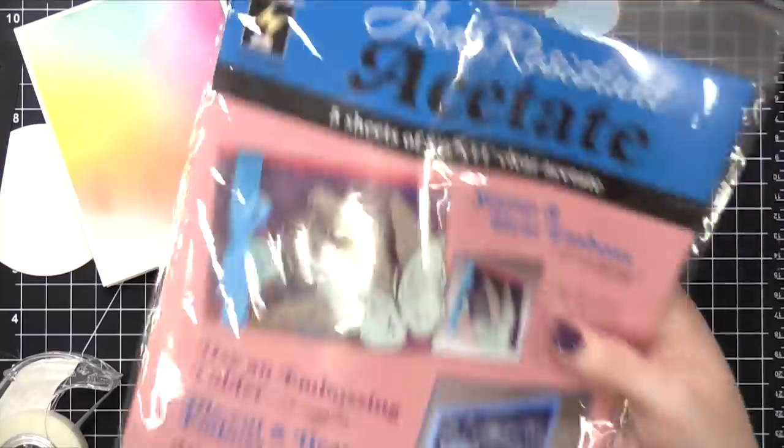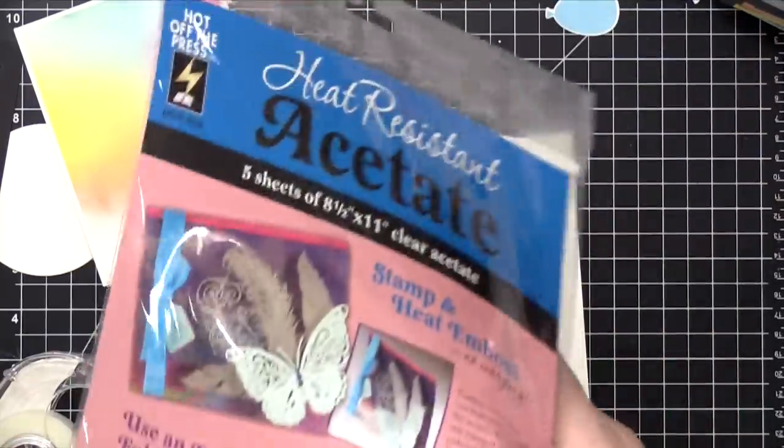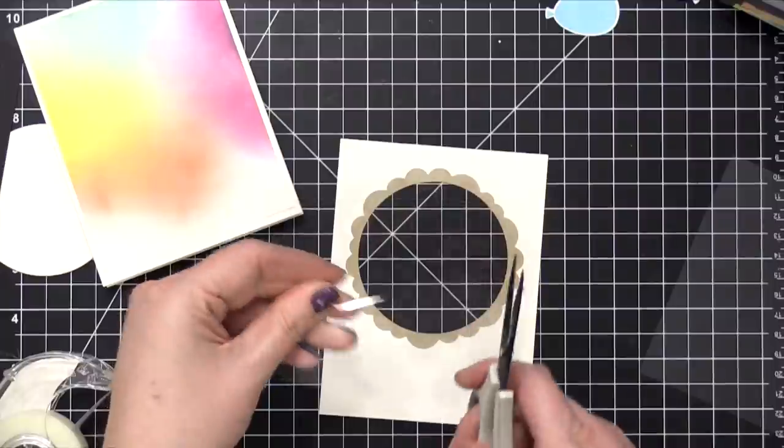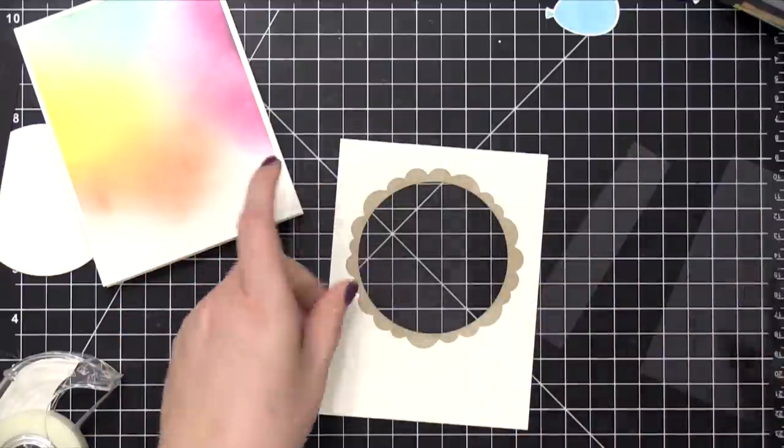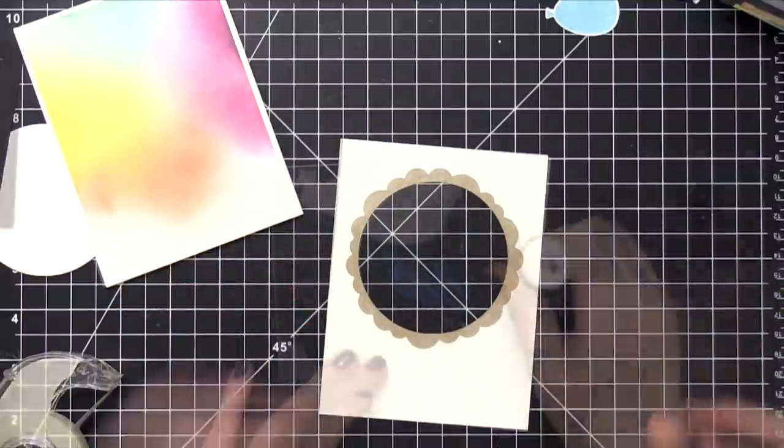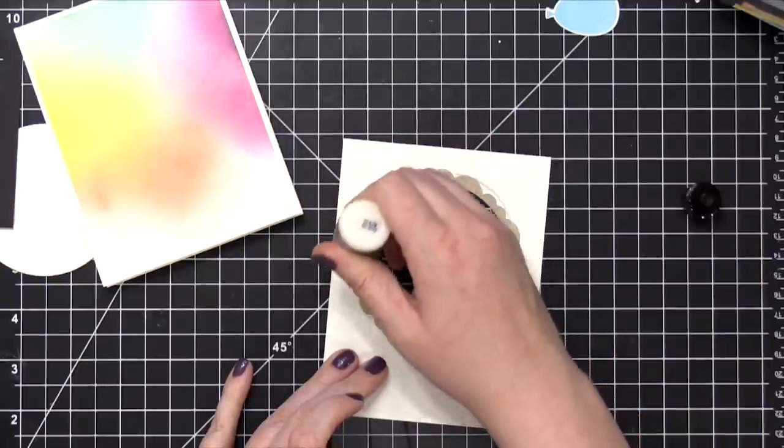So I'm gonna take some heat-resistant acetate. It doesn't necessarily need to be heat-resistant for this particular card. It's just what I have and use. And I'm gonna cut it out so it's just a little bigger than that window frame.